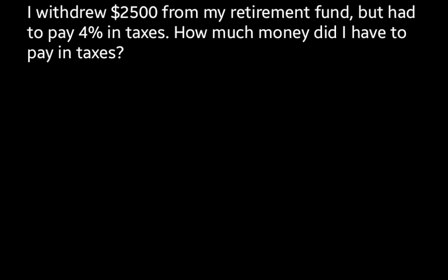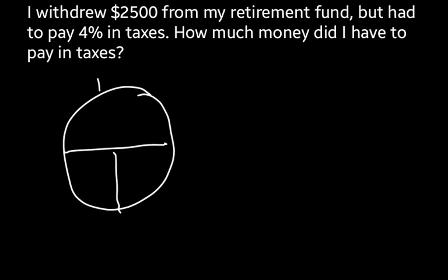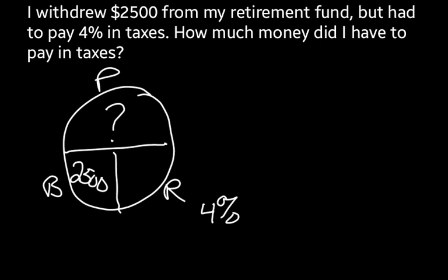We can also use a PBR circle for this next question, but it's a little more involved. It says: I withdrew $2,500 from my retirement fund but had to pay 4% in taxes. How much money did I have to pay in taxes? Drawing our PBR circle, the $2,500 represents the base — I'm going to pay 4% in taxes on that amount and need to find the dollar value. I don't know the portion, but I do know I started with $2,500 and am paying 4% in taxes. Converting 4% to a decimal: move two spaces left, add a zero, drop the percent sign — that gives us 0.04. Since both values are in the bottom boxes, we're going to multiply them.